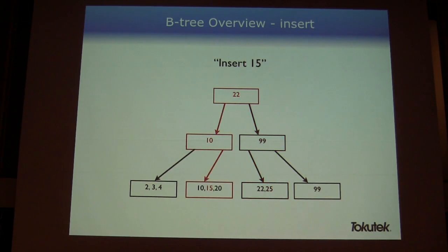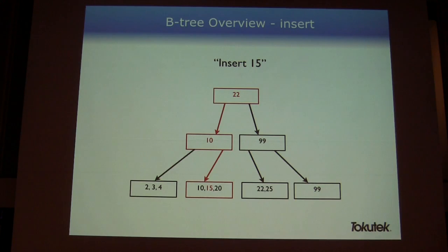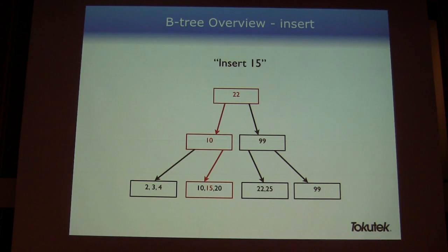If I want to insert something, it's a similar operation. I first have to understand where I would put what I'm inserting. If I'm inserting 15, it goes left of 22, right of 10, and I land in that leaf node at the bottom which already has values 10 and 20. I store 15 in the middle so it retains its sorted properties.